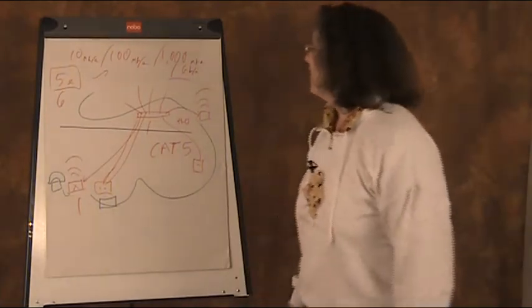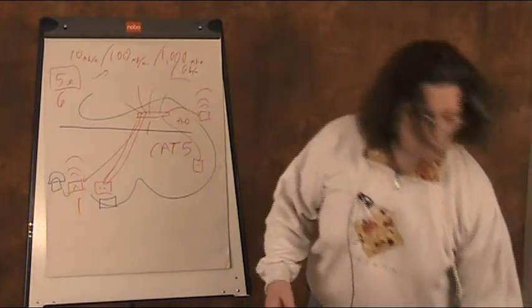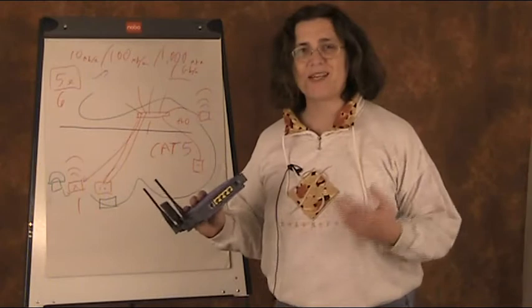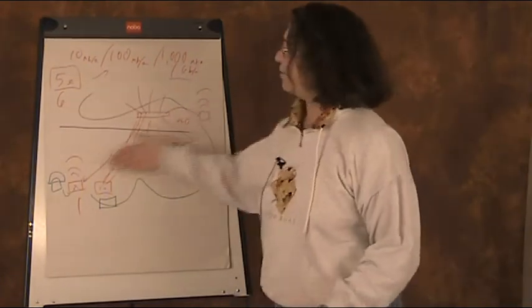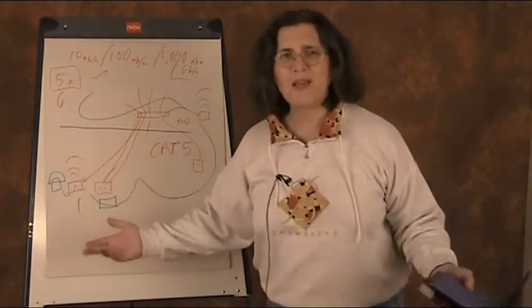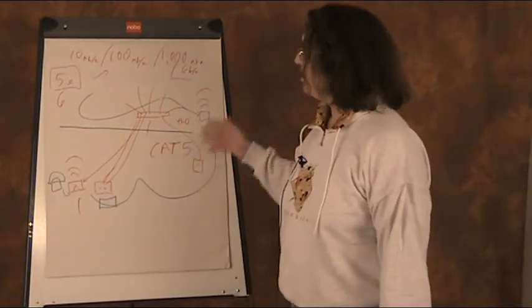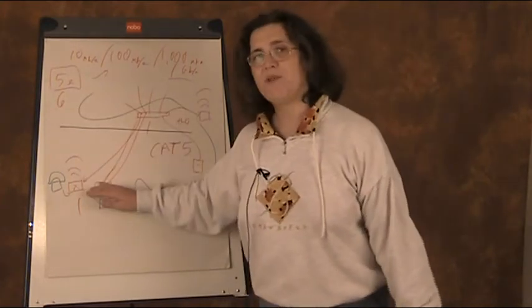These devices only have 100 megabits per second tops. Category 6 cable between the switch and router would be a waste of money. For the other rooms, category 5e is perfectly acceptable.